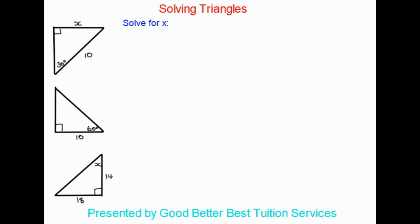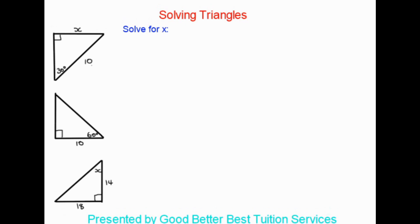Let's have a look at how we go about doing that. The question asks us to solve for x. What we need to do is follow these basic steps. First, we write 'given', and then we write what's given to us — firstly, this angle of 30 degrees.